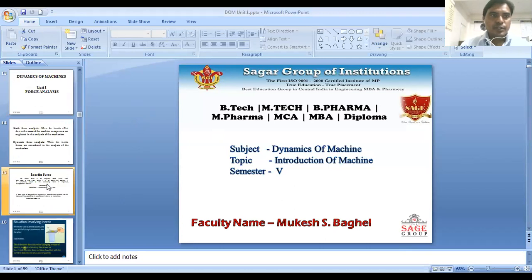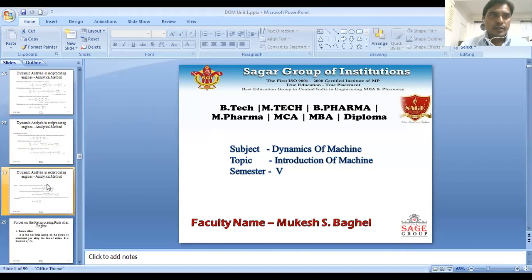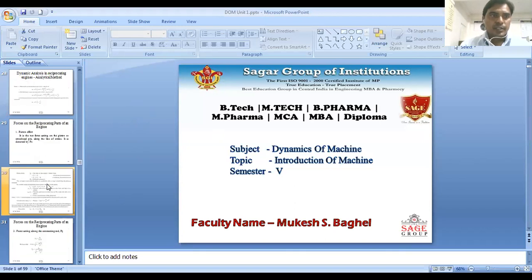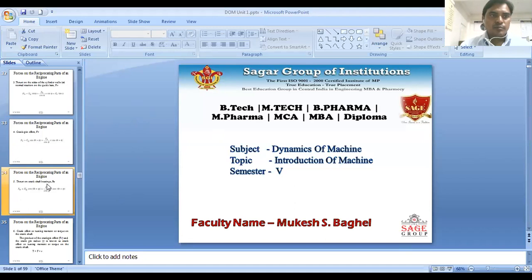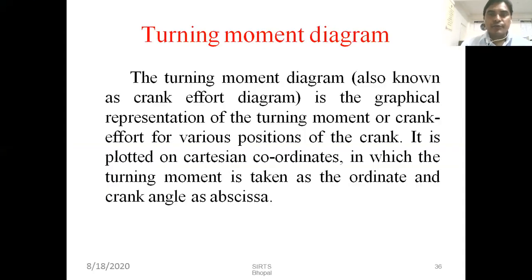The turning moment diagram is a graphical representation of the turning moment and the crank angle. I have some definitions by which I would like to explain the turning moment diagram. The turning moment diagram is the graphical representation of the turning moment or crank effort for various positions of the crank. It is plotted on Cartesian coordinates in which the turning moment is taken as the ordinate and the crank angle as the abscissa.